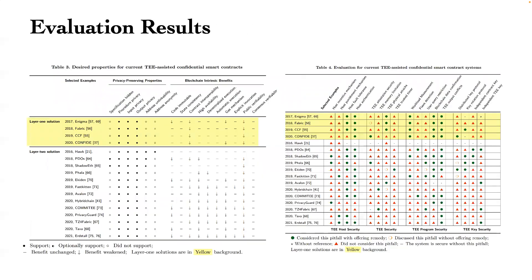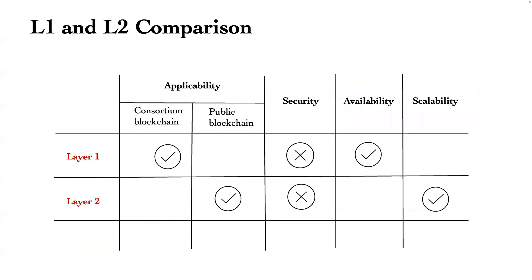Based on our evaluation framework, we provide detailed evaluation results for 17 real-world projects. We analyze each with our evaluation metrics and summarize the results in two large tables. Layer-1 solutions are mainly built on top of consortium blockchains, while layer-2 solutions are based on public blockchains. Layer-1 solutions excel in system availability, while layer-2 solutions offer better performance and scalability.